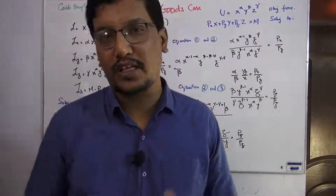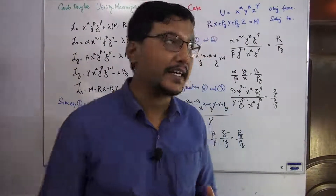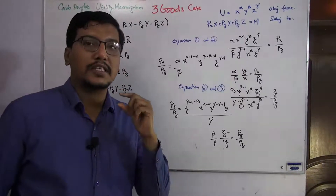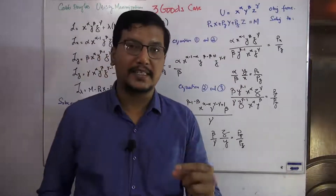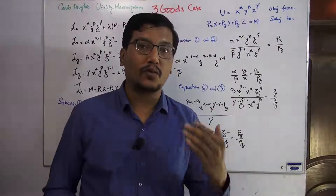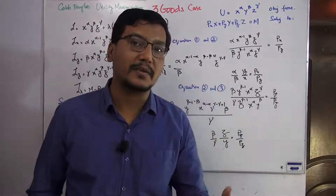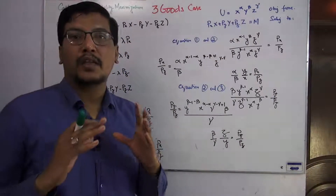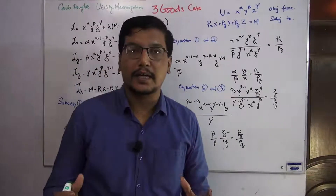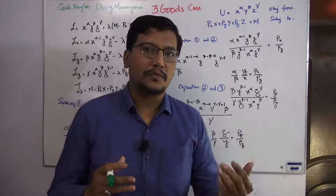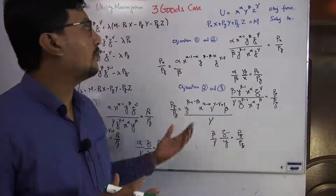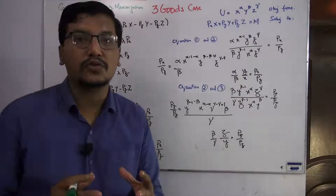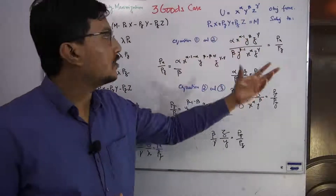Hello everyone, assalamu alaikum, and welcome to my students and viewers. Thanks for joining us. We have discussed in detail about utility maximization and how, if we have a two-good case, we use the mechanism of utility maximization subject to a budget constraint. Today we will see a three-good case, which is a little bit of an extension of the Cobb-Douglas function.